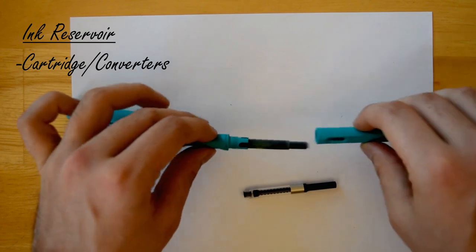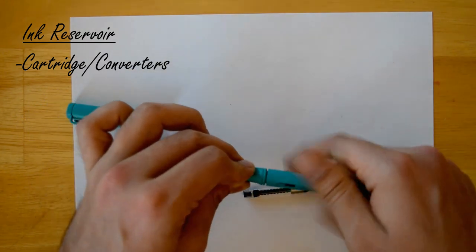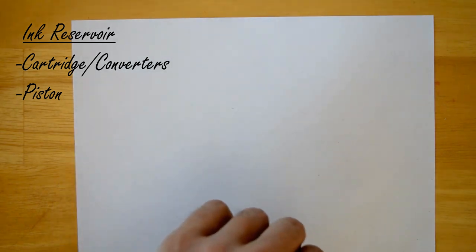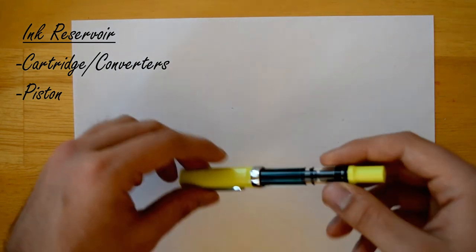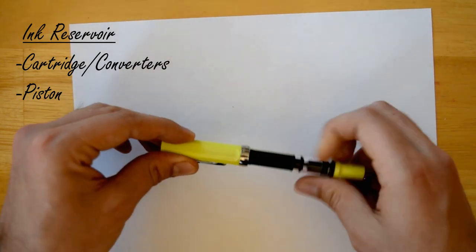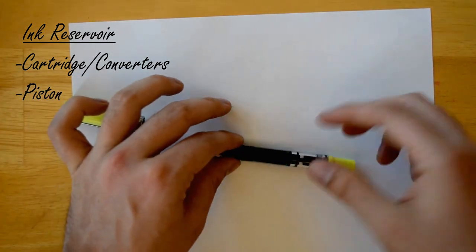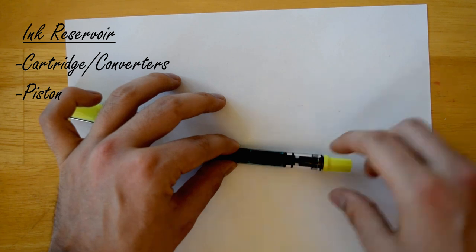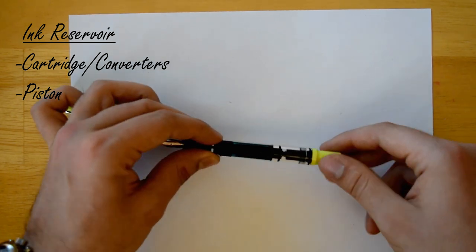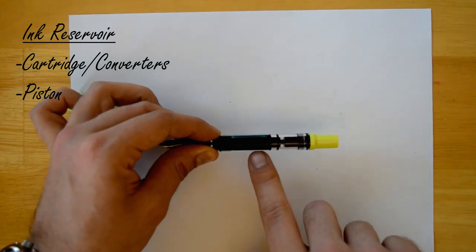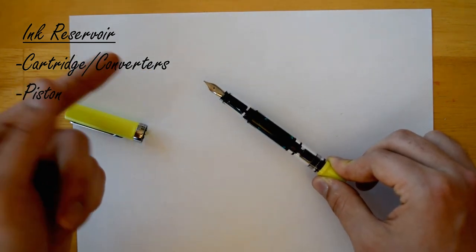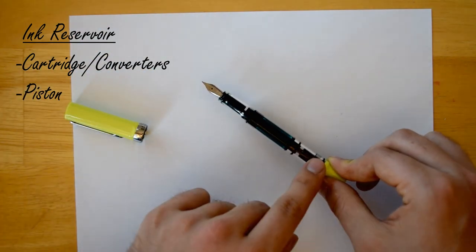Now let's move on to piston fillers. On a piston filler pen like this Twsbi Eco, the ink is like a giant converter. You have the cylinder, the piston inside, you have the piston knob here, and you turn it to move the piston back and forth in the barrel. This absorbs ink or it pushes it out in the bottle. So this is a second option for carrying ink in a fountain pen.